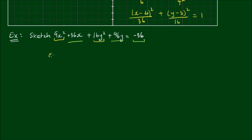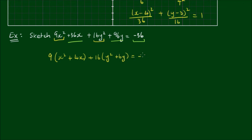Factoring out a 9 in the x terms gives 9 outside of x squared plus 4x. Factoring out a 16 for the y terms gives 16 outside of y squared plus 6y, equal to negative 36.